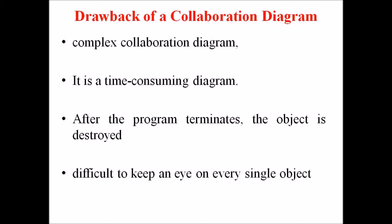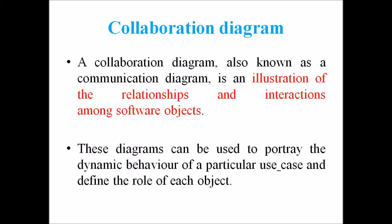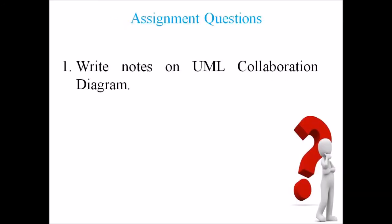So my dear students, a collaboration diagram is used to show the relationship between the objects in a system. Both the sequence and the collaboration diagram represent the same information, but the difference is in the way of presentation. Instead of showing the flow of messages, it depicts the architecture of objects residing in the system as it is based on object-oriented programming. Hope you have understood this topic. Kindly go through this assignment question: write notes on UML collaboration diagram.